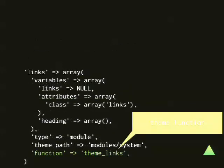The second thing in that entry is what it should actually do. In this case it says you should call a function, and the function is called theme_links. That is a core Drupal function located in theme.inc — you can look at it there — and it defines all the logic needed to theme those links. The last thing is called the origin information, which defines where this information in the theme registry actually comes from. In this case it comes from the implementation of hook_theme in the system module.